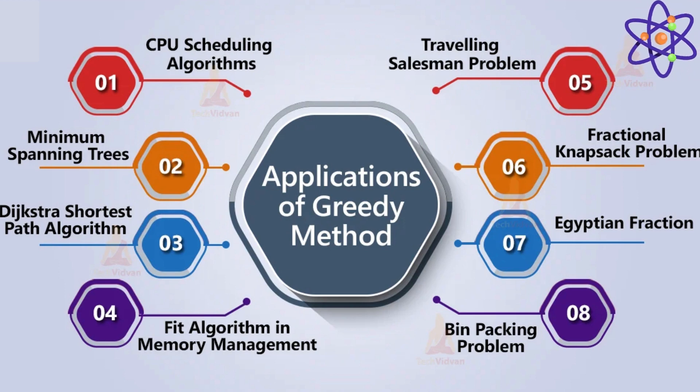This chapter explores the greedy algorithm paradigm, where decisions are made locally at each step to optimize a global objective. Students study various greedy algorithms such as Kruskal's algorithm for minimum spanning tree and Dijkstra's algorithm for shortest paths.